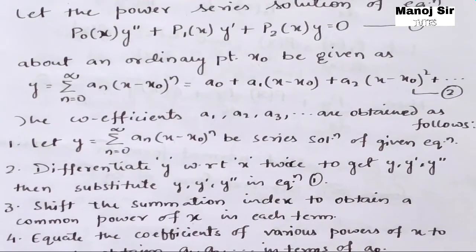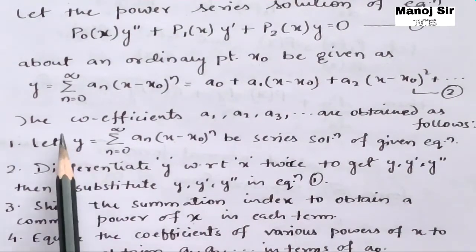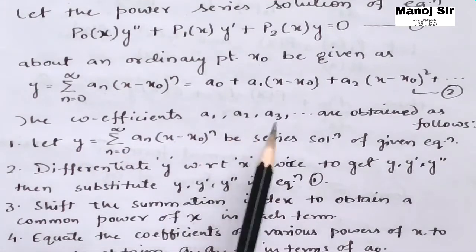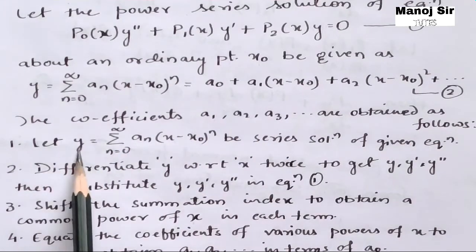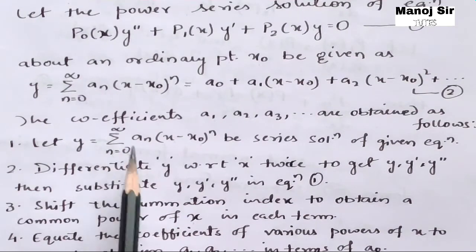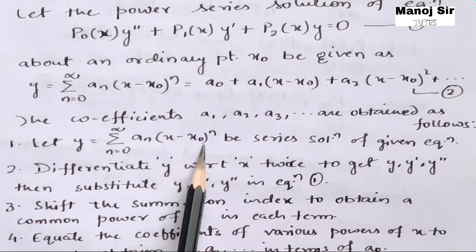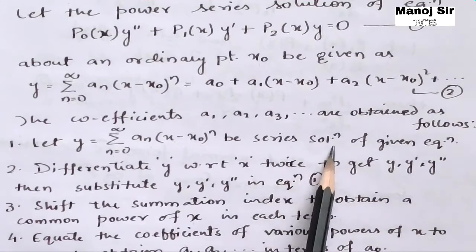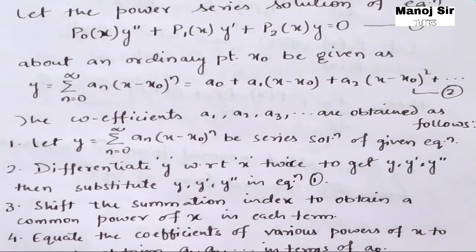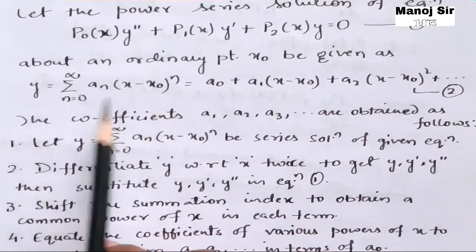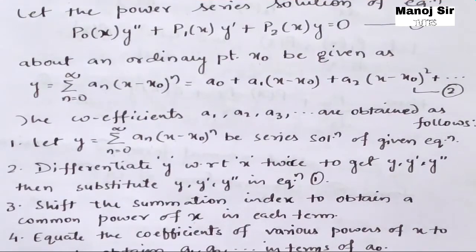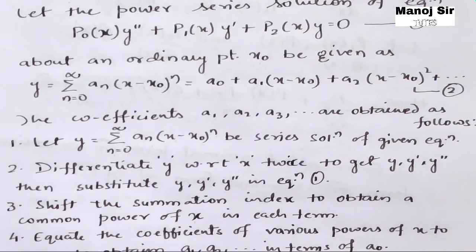Step 1: Let y = summation from n=0 to infinity of a_n (x − x0)^n be the series solution of the given equation. We assume this as our starting power series solution.